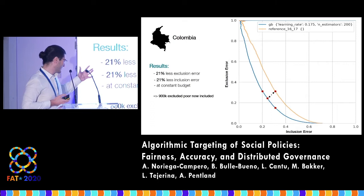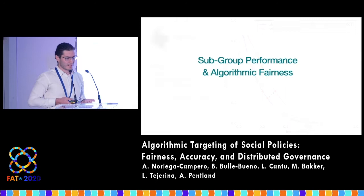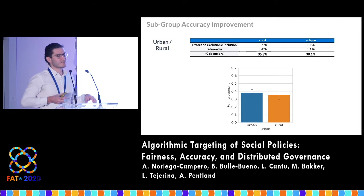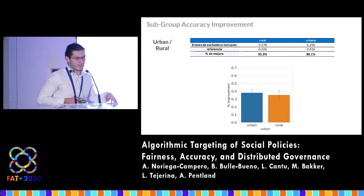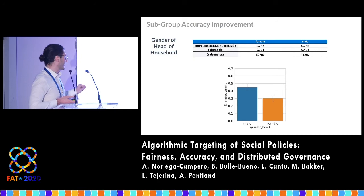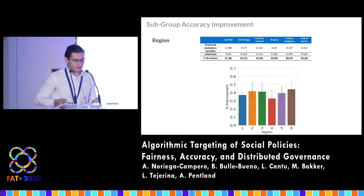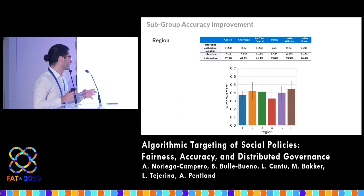Similar results in Colombia — with a smaller percentage reduction but of course a larger country — meaning almost 900,000 poor Colombians who now can be included. At the subgroup level, we analyzed whether the change of methodology was beneficial to subgroups of the population. When those bars are above the zero line, there was an improvement. There was an improvement for urban and rural populations, when splitting the data by gender of the head of household, size of households, regions, etc. The accuracy improvement held true for all of the subgroups we analyzed.